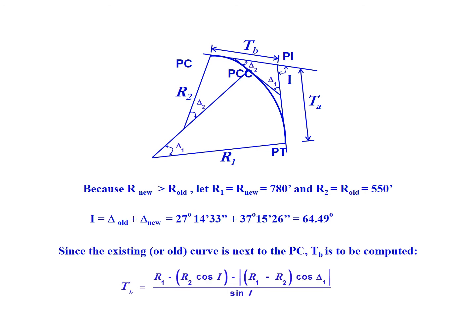Because the existing curve is next to the PC and its size in relation to the new curve—again, it's smaller than the newer curve that will be added.